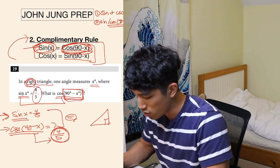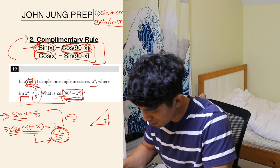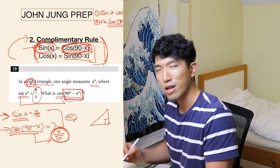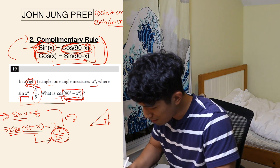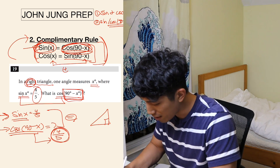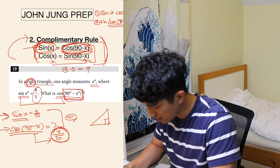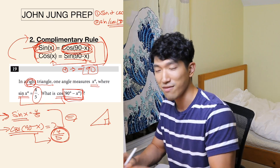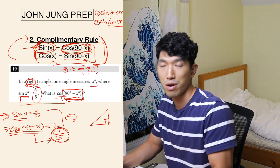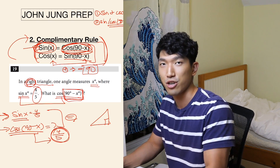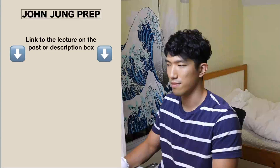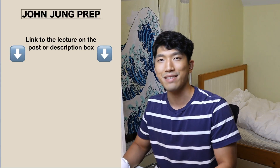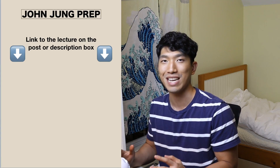So our answer is 4/5. For complementary rule, what you need to know are those two identities, and also that the angles on the inside have to add up to 90 degrees. If that's something you're not familiar with, don't worry — we'll go over that in the lecture. That's how you solve these two types of trigonometry questions that show up on the SAT.